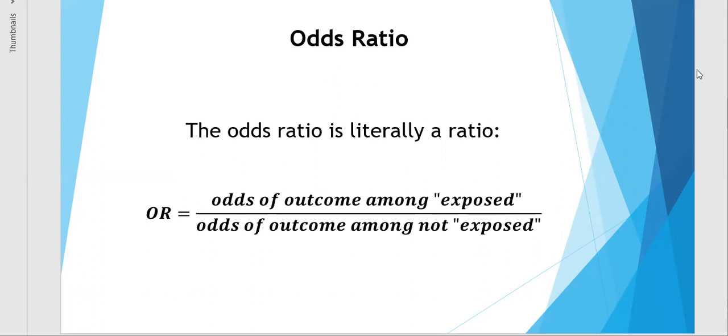Odds ratios are typically reported in medical and nursing research and also epidemiological research, where the odds ratio compares the odds of an event or an outcome occurring among those who are exposed. That can be exposed to a treatment, exposed to an intervention, or something like that. And then the denominator would be the odds of an outcome among those who were not exposed.